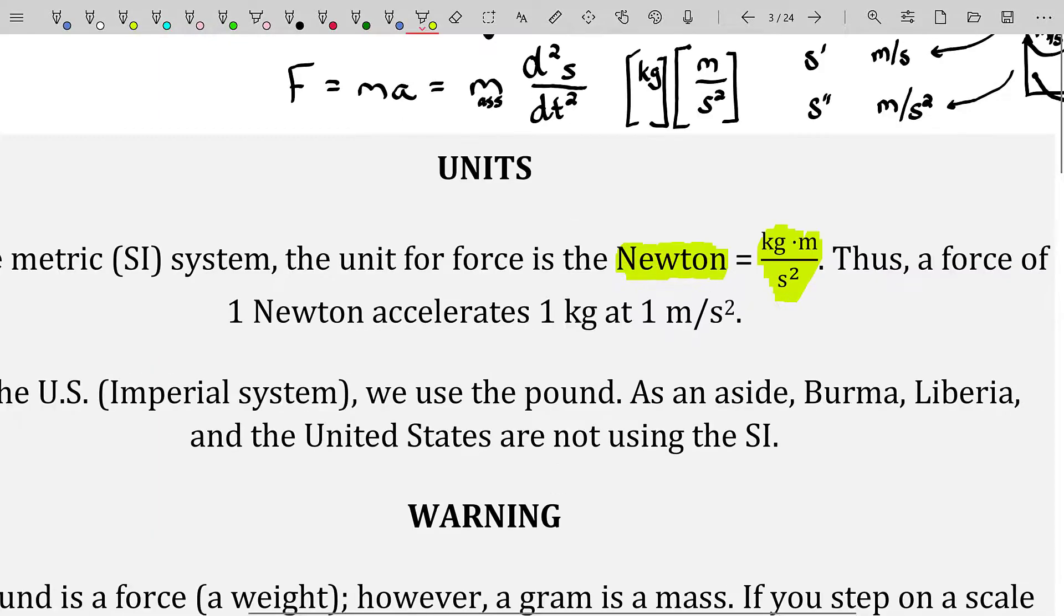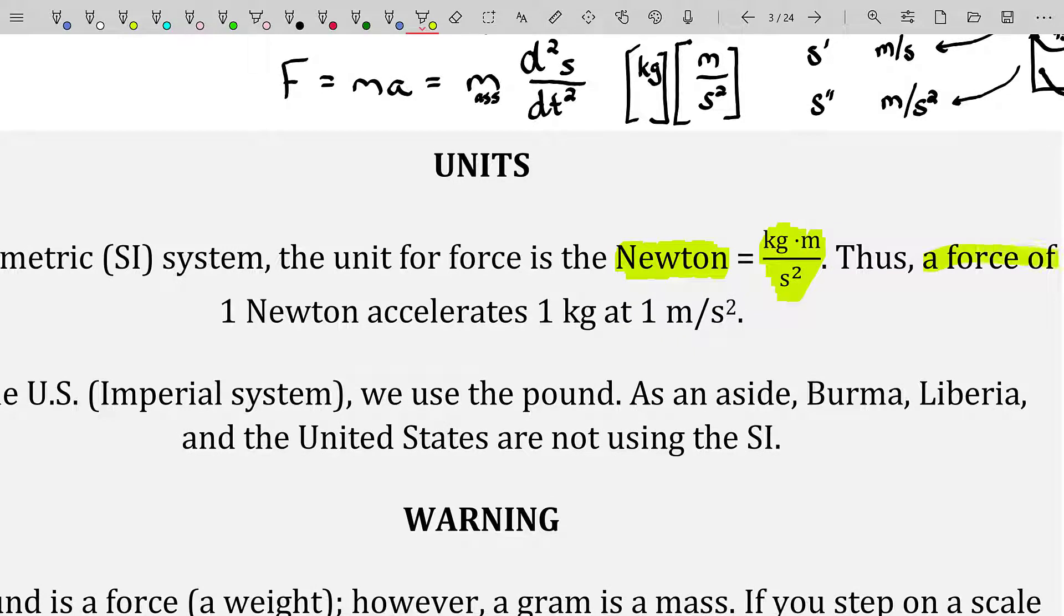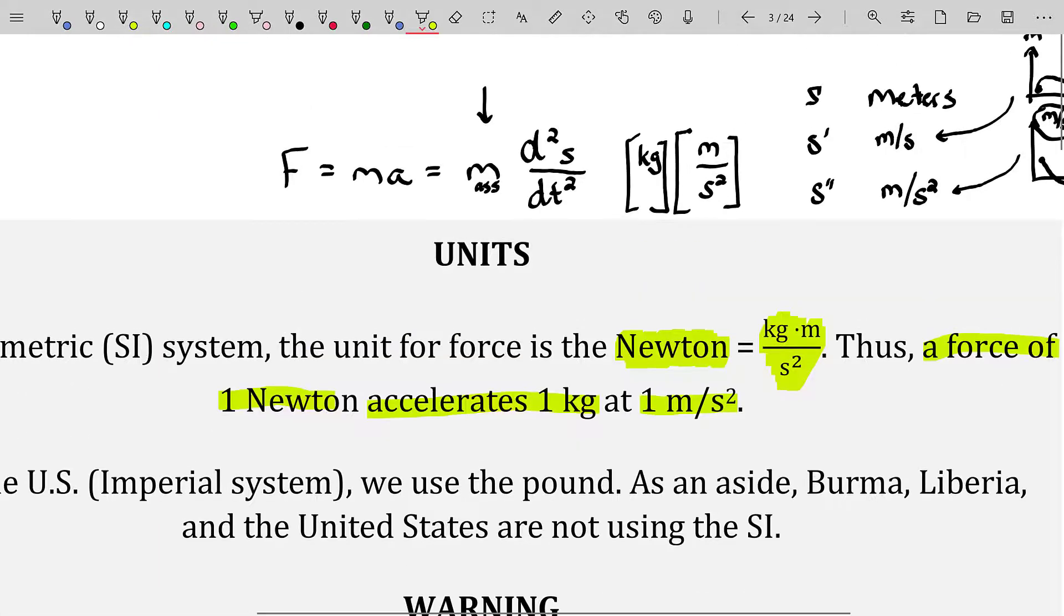So the units of force in the metric system is the Newton. Conceptually, this just says a force of one Newton accelerates one kilogram at one meter per second squared. And that interpretation is just because I'm saying the mass, let's just let that be one, one kilogram. And so if the force is one Newton, then this is just saying, okay, we have one Newton is equal to one kilogram at one meter per second squared. All the units will match up perfectly.